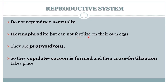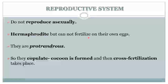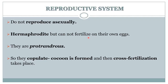Reproduction is the process in which a new individual is formed from a pre-existing one. Reproduction is of two types: sexual reproduction and asexual reproduction. In sexual reproduction, the male and the female gamete fuse to form a new individual.